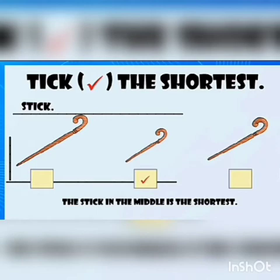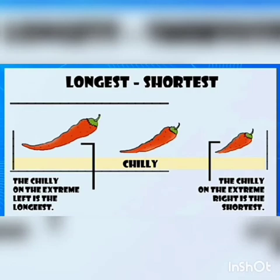There are three sticks. Which one is shortest? The stick in the middle is the shortest stick. Next, there are three chilies. We have to identify longest and shortest. The chili on the extreme left is the longest and the chili on the extreme right is the shortest. So these are the examples of longest and shortest.